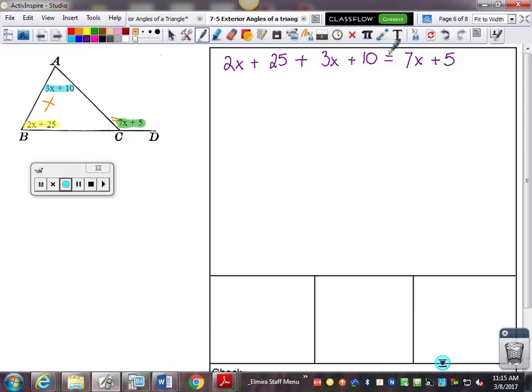Now we've got a big equation to solve. So first of all, I'm going to look at the left-hand side. And I'm going to see that I have like terms that I can combine. 2x plus 3x is 5x, and plus 25 and plus 10 make plus 35.